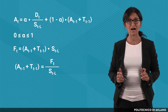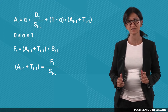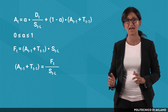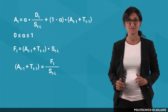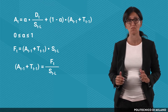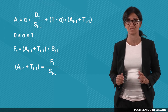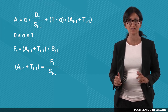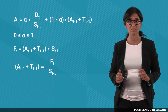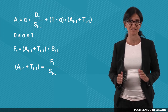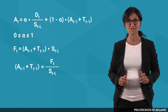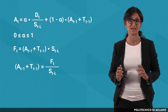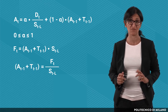If alpha is near to 1, the forecasting model is very responsive to changes in the average, since recent values are weighted more than previous data. On the contrary, if alpha is near to 0, the forecasting method is very static, since variations in recent values have a limited effect on the updated average.